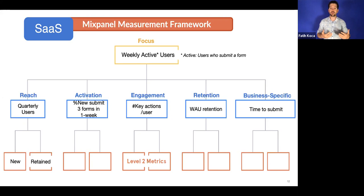After establishing the key focus metric, we go one level down and we pick one metric for reach, which is the user base. The user base here is quarterly users because for this specific business, if a user did not use the product for three months, it becomes dormant. There's little probability that the user will come back and continue to use the product.